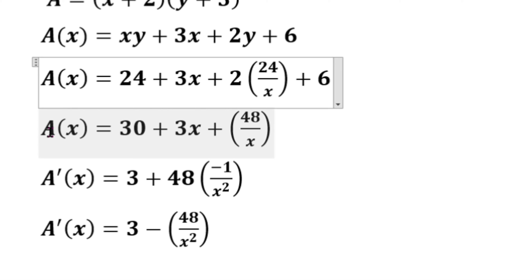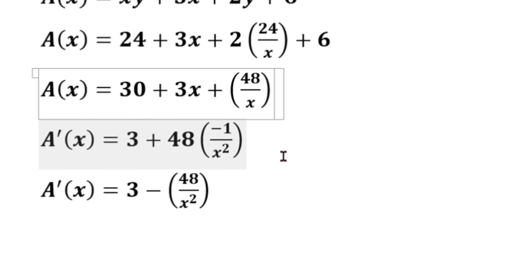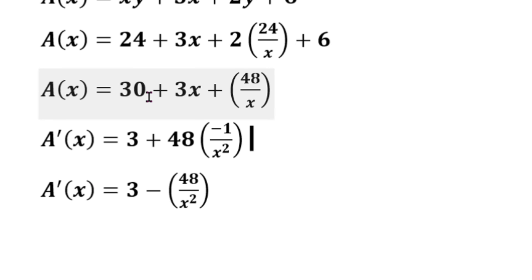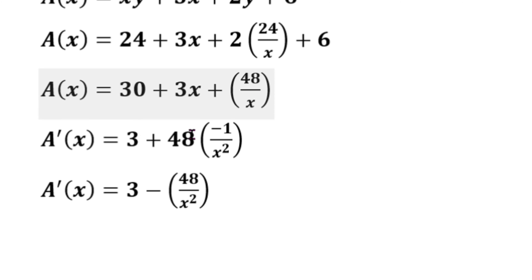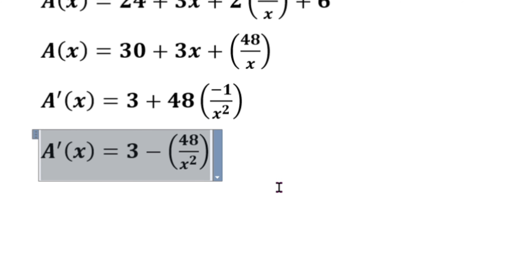This gives us the area as a function of x, written as A(x). Taking the first derivative A'(x): the constant 30 differentiates to 0, 3x differentiates to 3, and 48·(1/x) differentiates to minus 48 by x squared. So the first derivative is 3 minus 48 by x squared.